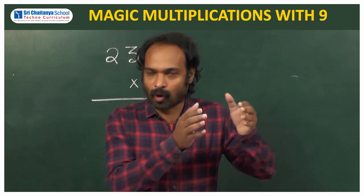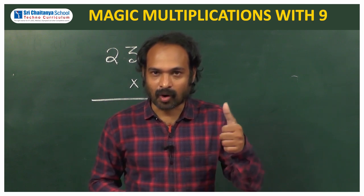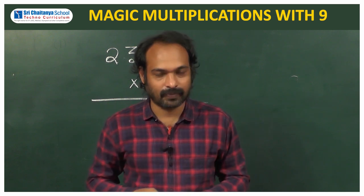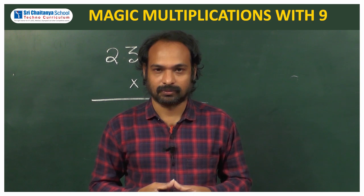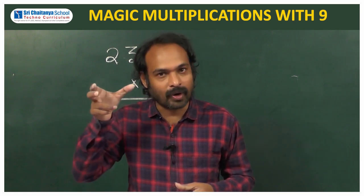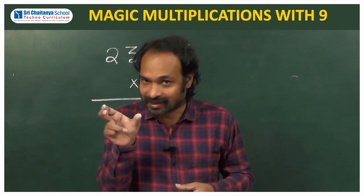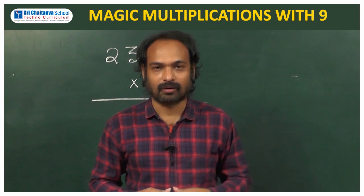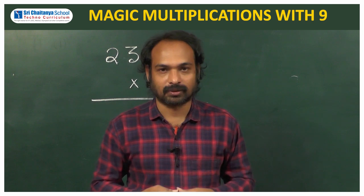Here, what we do is: we will block the number of digits as many number of 9s are there. Now, the given digits are classified as blocked digits and unblocked digits. This is the first step. Second step: add 1 to unblocked digits. Third step: deduct the resultant from the original number. And step 4 is simply write the complements of the blocked digits.